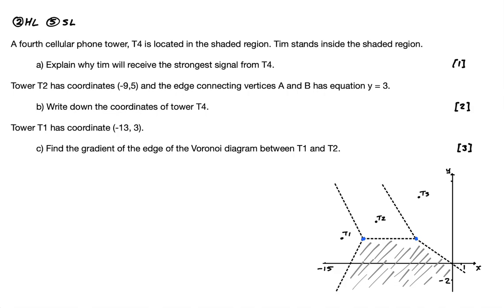Okay, this is question 2 for HL and 5 for SL. We have a Voronoi diagram here. These are cellular phone towers T1, T2 and T3, and they're in these cells of the Voronoi diagram, these regions here. And T4 is located in the shaded region, somewhere in here, T4. Tim stands inside the shaded region. Explain why Tim will receive the strongest signal from tower 4.